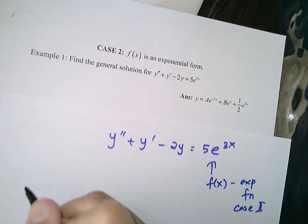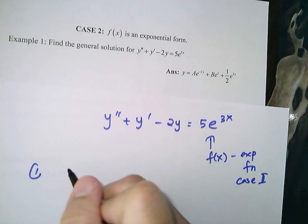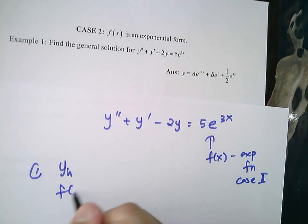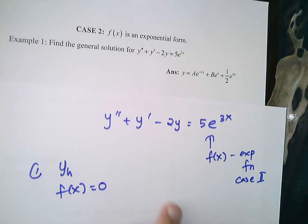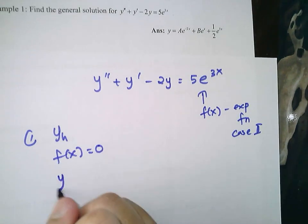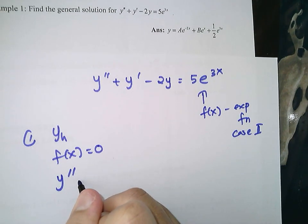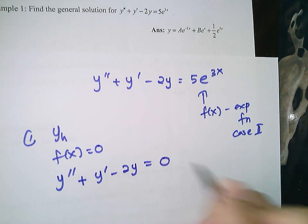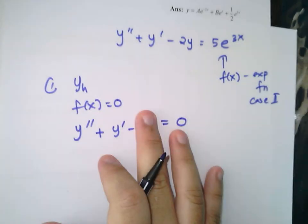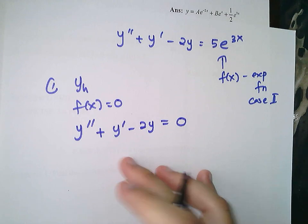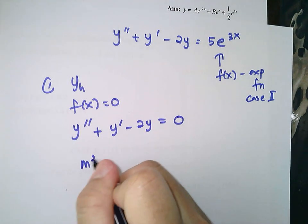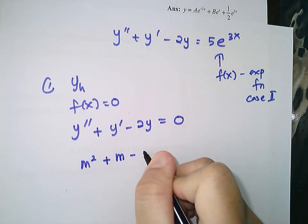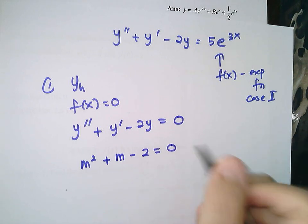The first step is to find your yh by assuming f(x) is equal to 0. So you will have y double prime plus y prime minus 2y is equal to 0. Change this into the characteristic equation, which gives you m² + m − 2 = 0.